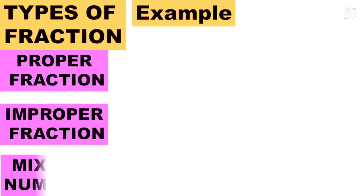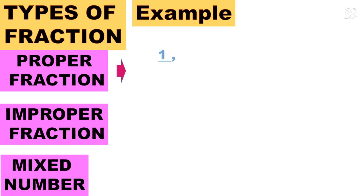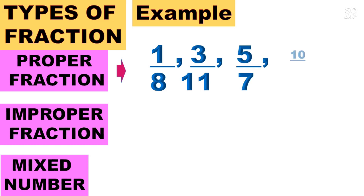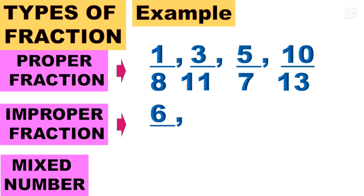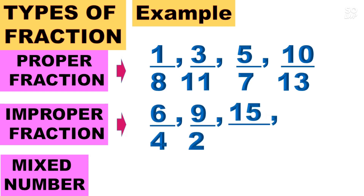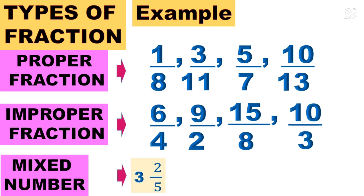We have here examples of proper fraction, improper fraction, and mixed number. Proper fraction examples: 1/8, 3/11, 5/7, 10/13. Improper fraction examples: 6/4, 9/2, 15/8, 10/3. And mixed number examples: 3 and 2/5, 2 and 1/3, 5 and 3/7.